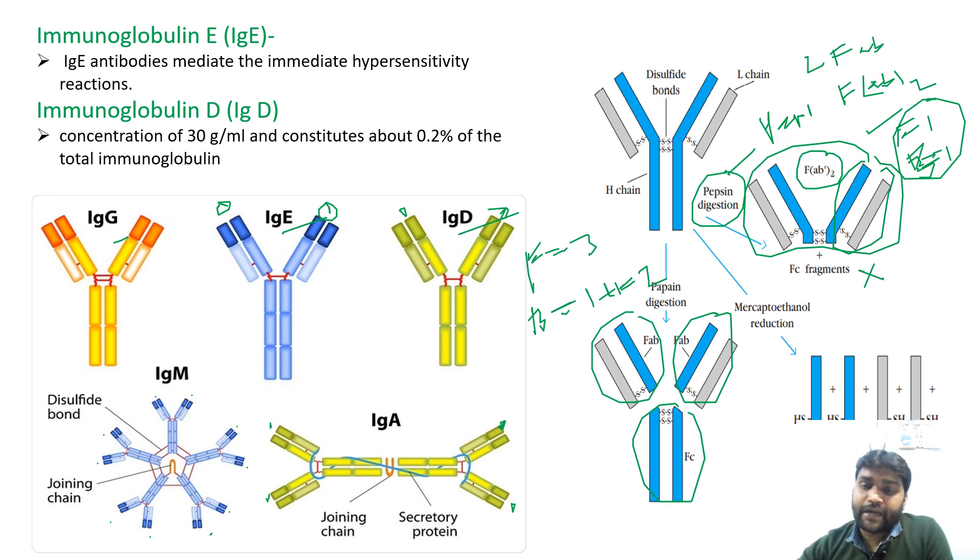Second, if you digest with papain, then the possibility is as you can see, one fragment here, second fragment here, and third fragment here. So fragment number will be three. But if we talk about bands, since these two are same in molecular mass, then the band for them will be one, and for this one will be one. So one plus one equals two. So fragment number will be three, but band number will be two.